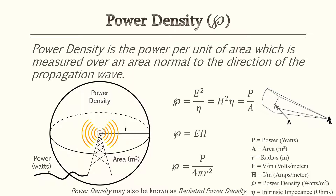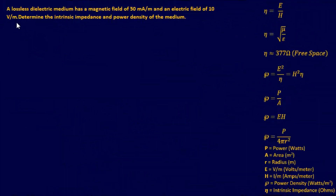In my other videos I use 'A' for permeability (amps over meters), but for this lesson I've changed it to 'I over M' — still amps over meters — so you don't confuse 'A' with area. Keep that in mind during the practice problems. For our first problem: a lossless dielectric medium has a magnetic field of 50 milliamps per meter and an electric field of 10 volts per meter. Determine the impedance and power density of the medium.